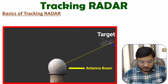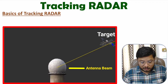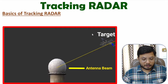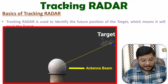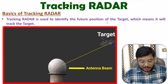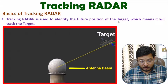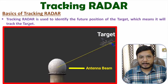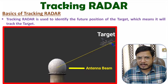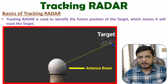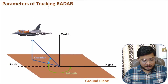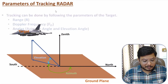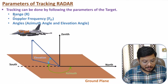The target is in motion, and along with the motion of the target, the antenna beam gets steered towards it. So the tracking radar system tracks the target along with its motion. The basic agenda of tracking radar is to identify the future position of the target, and with that identification we can track the target. To understand how exactly it tracks, you need to understand the parameters of a tracking radar system. In general, there are three parameters.